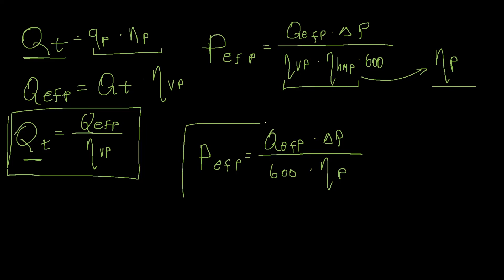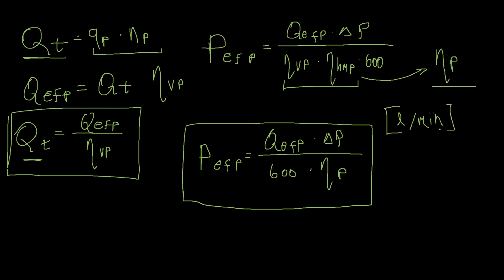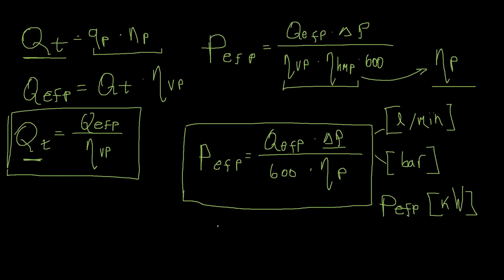In this equation, the flow rate is in liters per minute and the pressure is in bars. When you put these units into the equation, the effective power comes out in kilowatts. When we discussed axial piston pump sizing, I included a lesson from my second hydraulics course explaining efficiency factors — you should already know those concepts from there. If not, go back to the axial piston pump lesson and look in the resource section for the efficiency factors lesson.